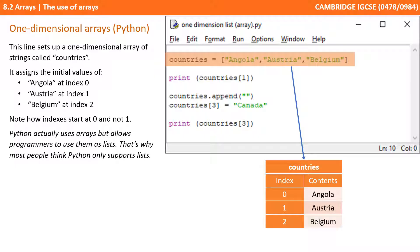Now, as we said before, Python actually uses arrays but allows programmers to use them as lists. And that's why most people think Python only supports lists. Now, this distinction and difference is not something you need to worry about. They'll be using the word arrays in exams, so stick with that.